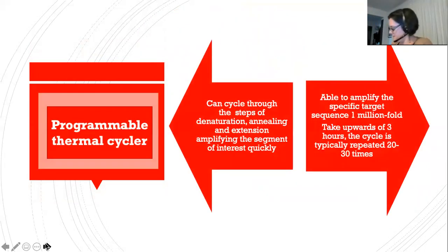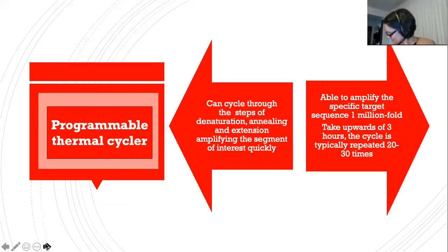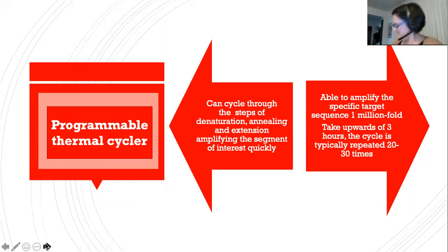An automated programmable thermal cycler is a laboratory machine that can cycle through the steps of denaturation, annealing and extension efficiently, amplifying the segment of interest quickly. A reaction that cycles 20 times will amplify the specific target sequence one million fold and can take upwards of three hours. The cycle is typically repeated 20 to 30 times, and the programmable thermocycler makes this process less labour intensive.